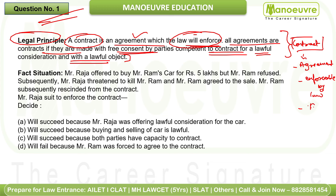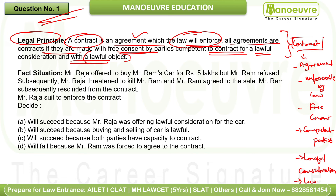There must be free consent — parties should give consent freely. Parties must be competent — the right persons, not minors. The contract must be for lawful consideration — what is received in return must be lawful, not illegal. There must also be a lawful object — a contract for something like murder is not valid. In short, the entire contract definition has been revised here.